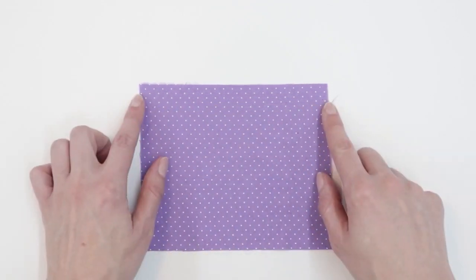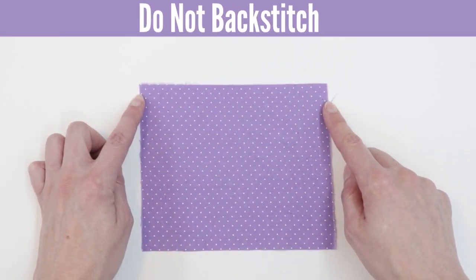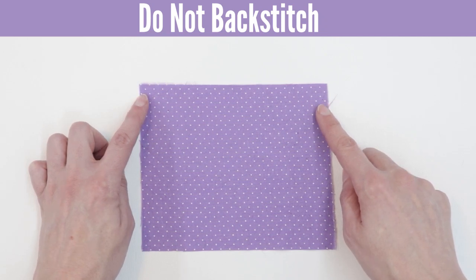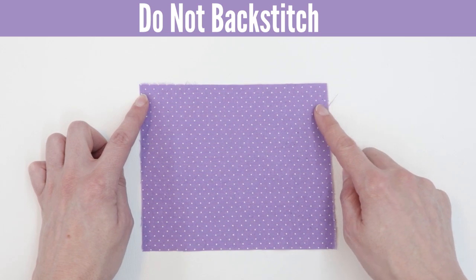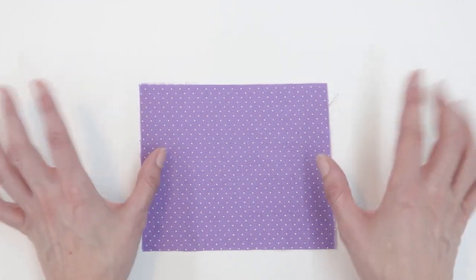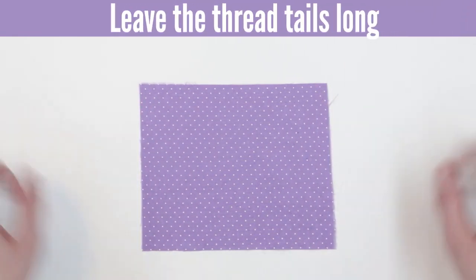Now because we want our fabric to slide along those strings we are not going to back stitch. If you back stitch it creates a knot which prevents the fabric from moving. So we don't want to do that. So make sure that you do not back stitch and leave your thread tails really long and that will help us in the end as well. So let's go ahead and sew that row of stitches.